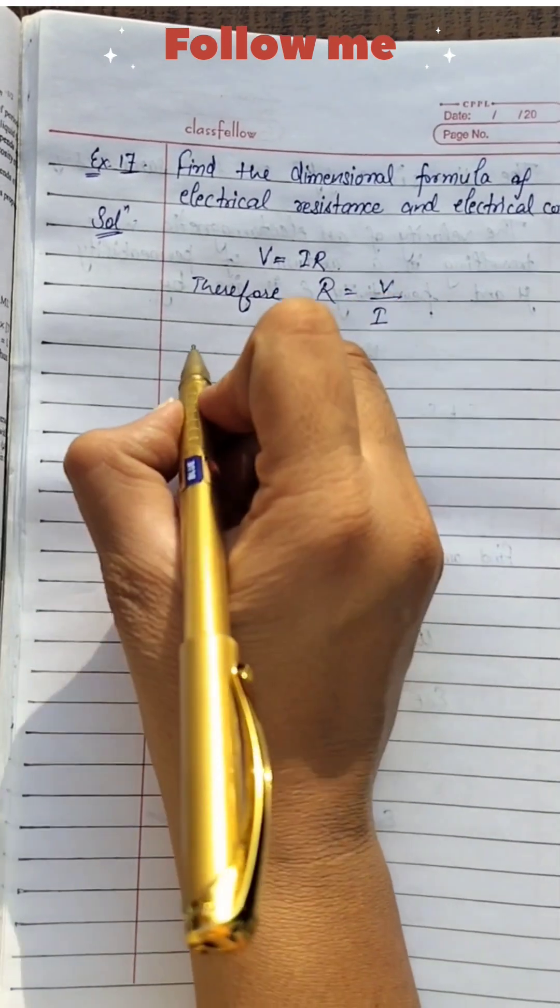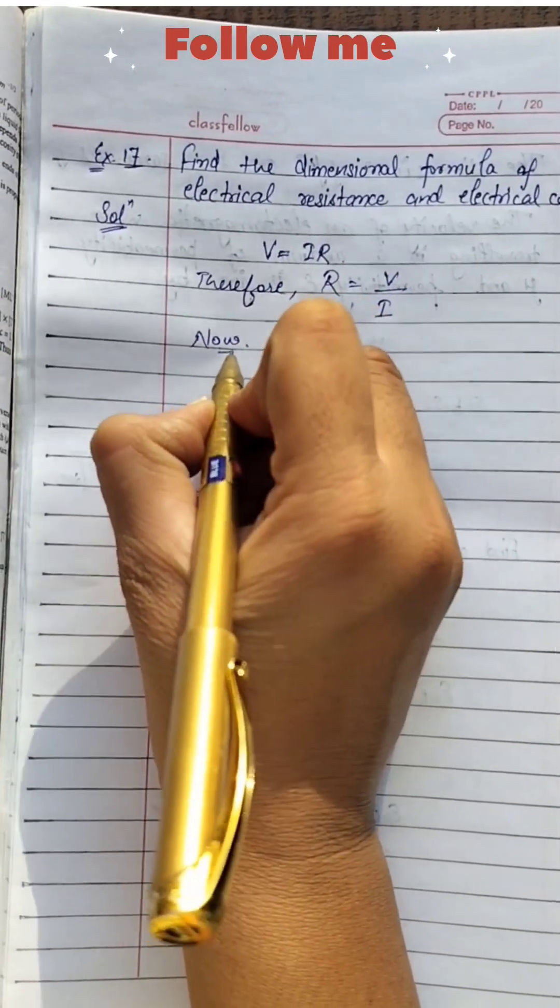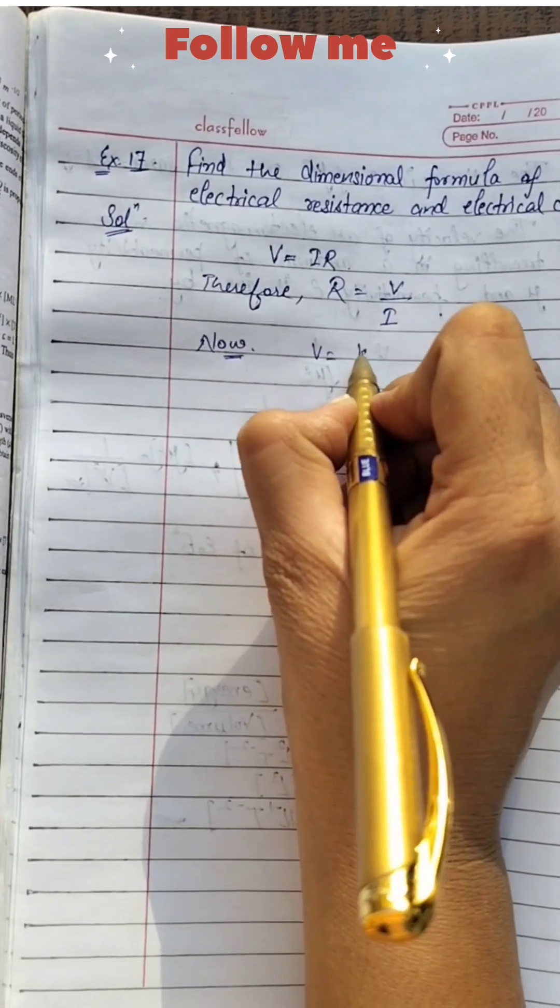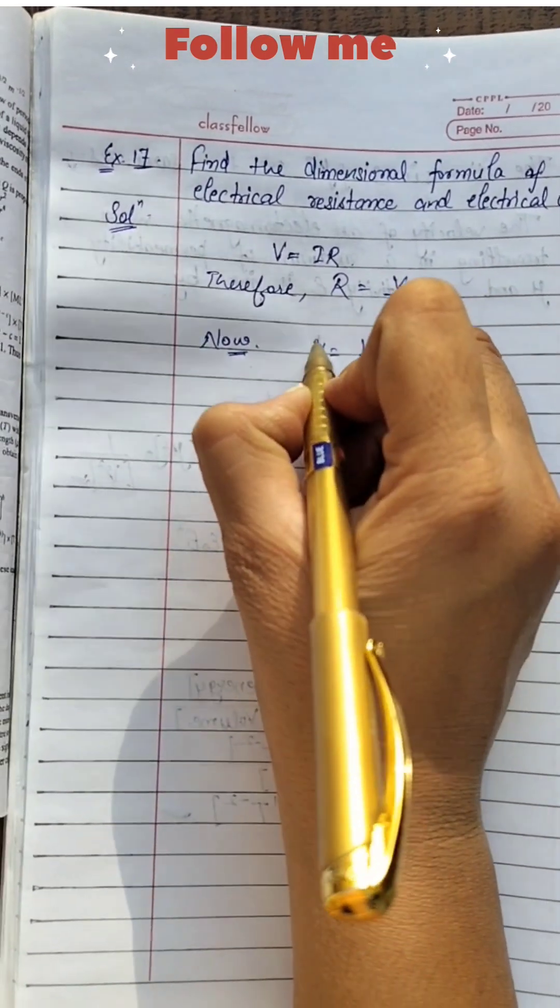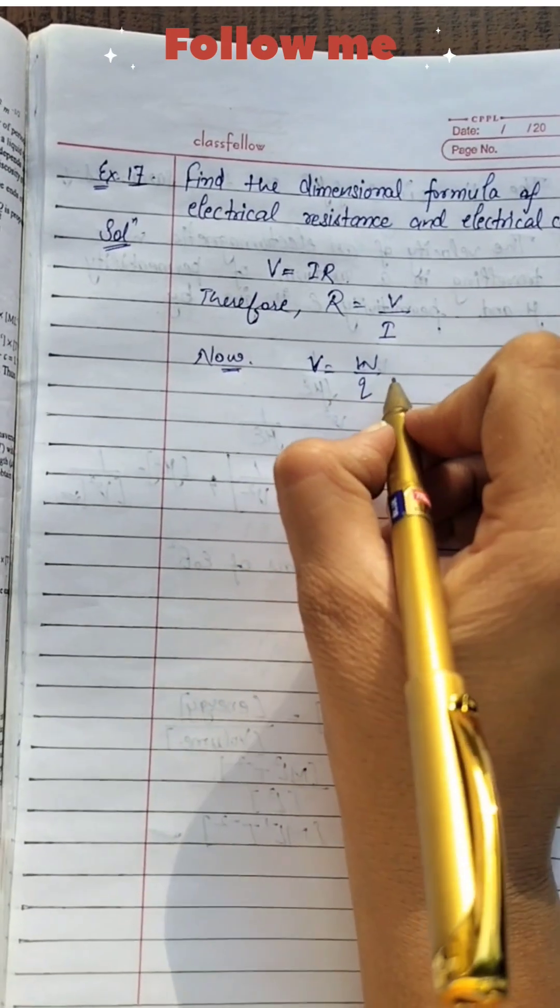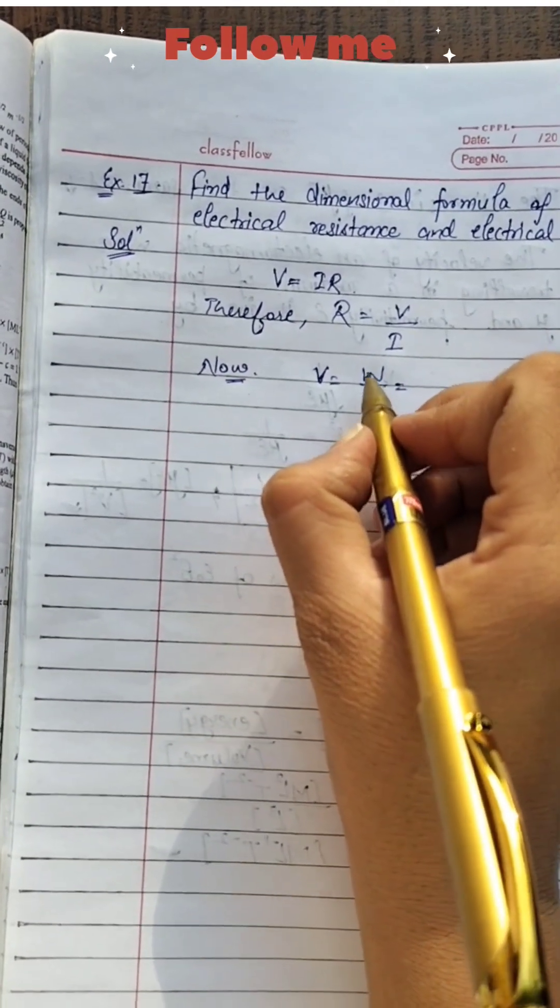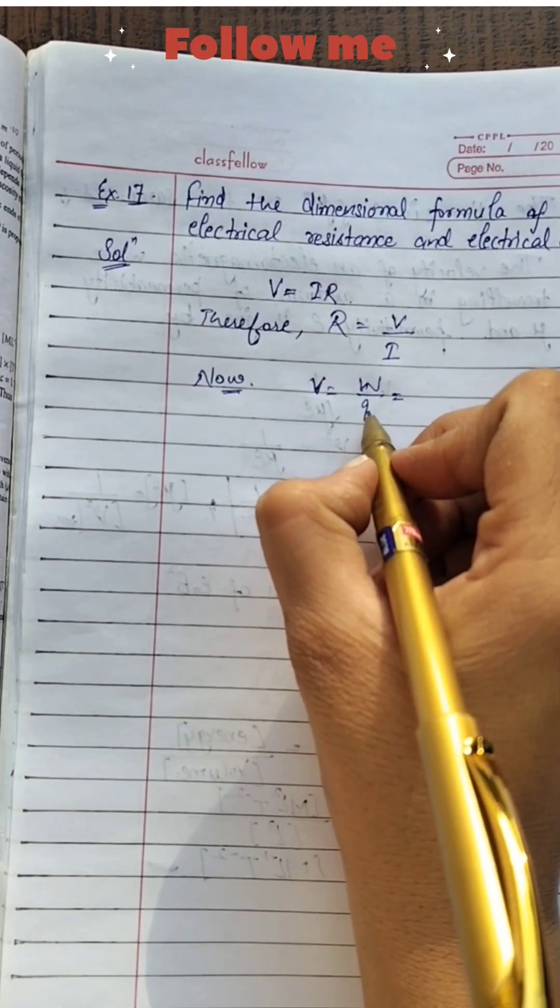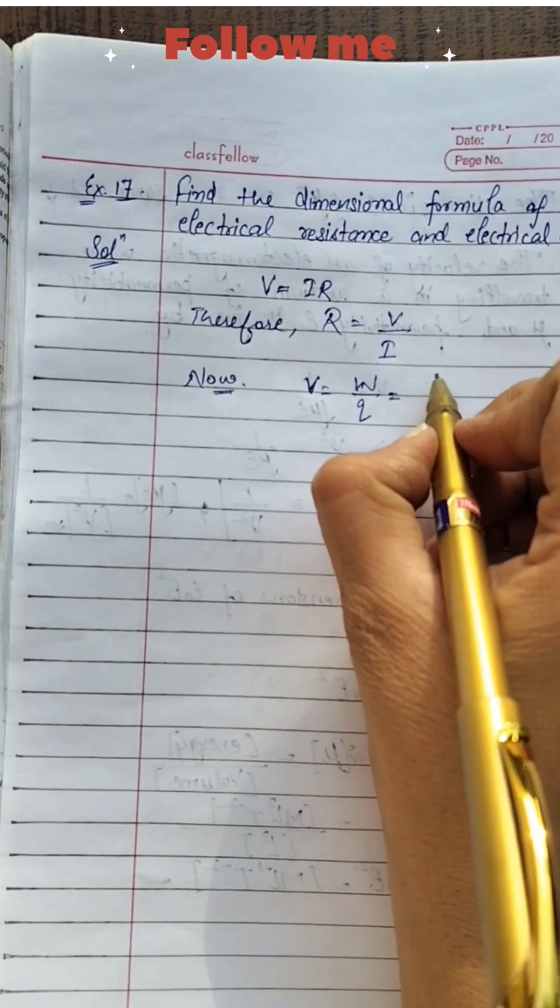Now V equals W upon Q. That is equal to work done upon charge.